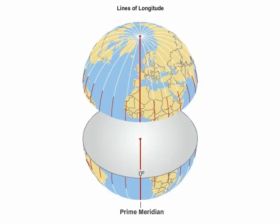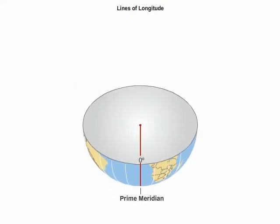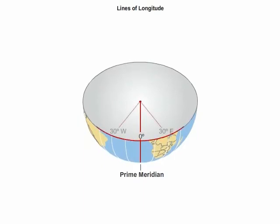The meridians converge at the poles. There are 180 degrees of longitude east and west of the prime meridian.